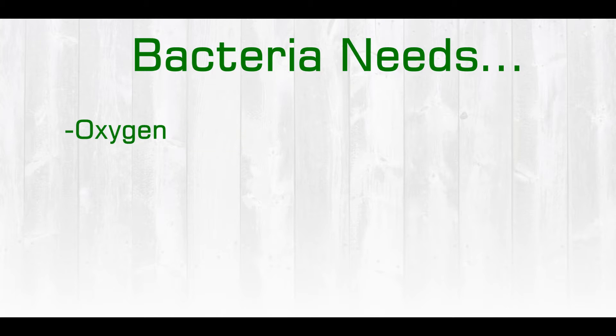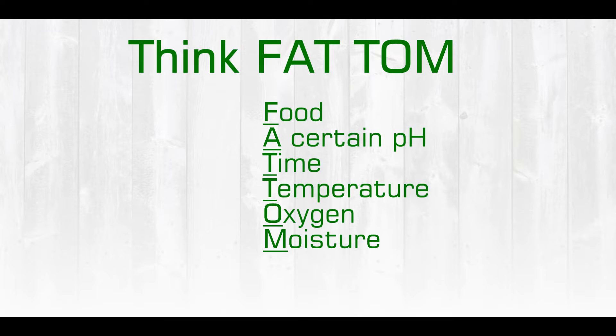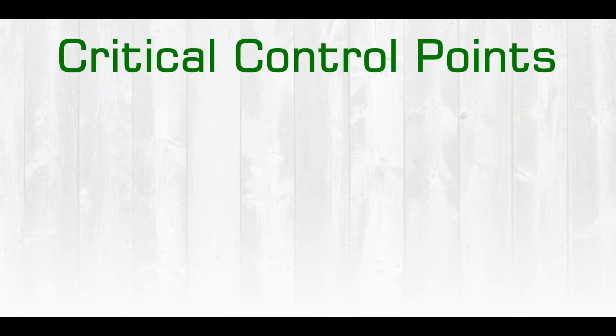Bacteria also require a certain amount of oxygen as well as a certain amount of moisture. If we can limit the amount of oxygen as well as the amount of moisture in a food product, we are putting up another hurdle or a way to prevent bacterial growth within the food product. These critical control points help to control product safety.